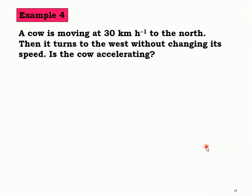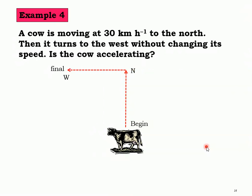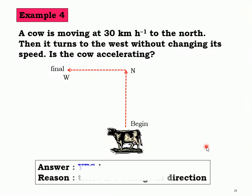A car is moving at 30 km/h to the north. It then turns to the west without changing its speed. Is the car accelerating? The speed remains 30 km/h, but the direction changes. If the direction changes, the car is actually accelerating because there is a change in direction.